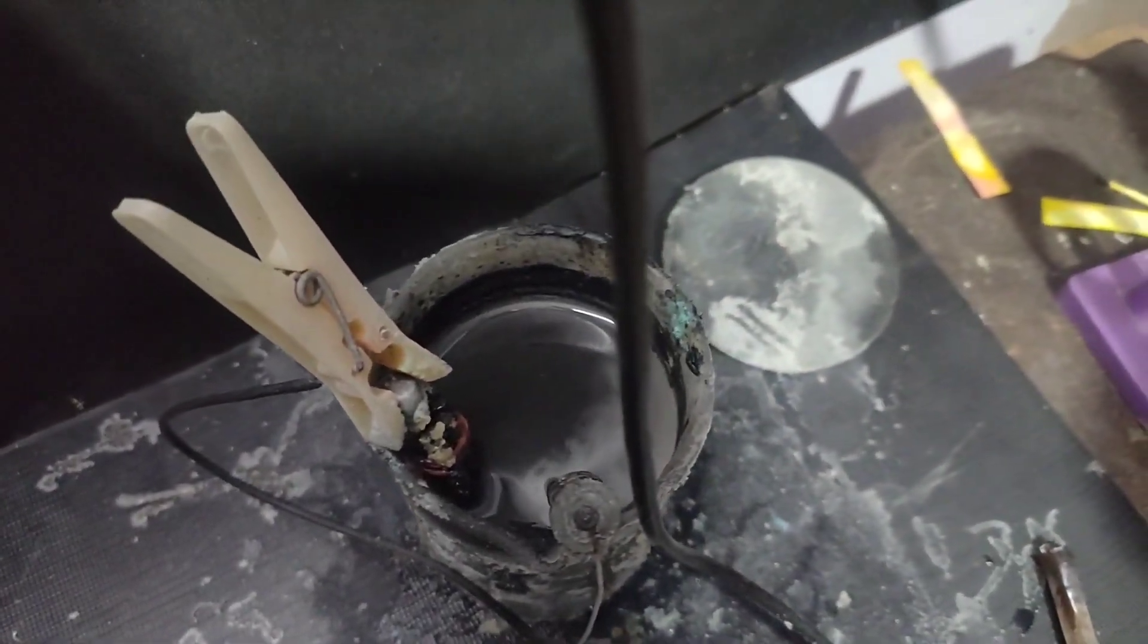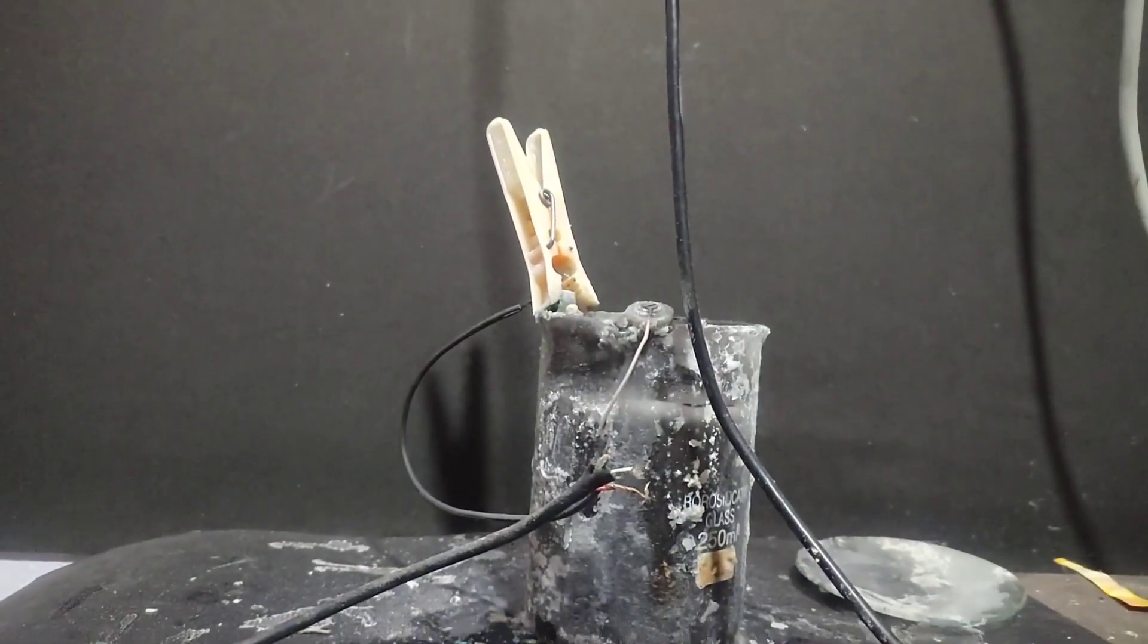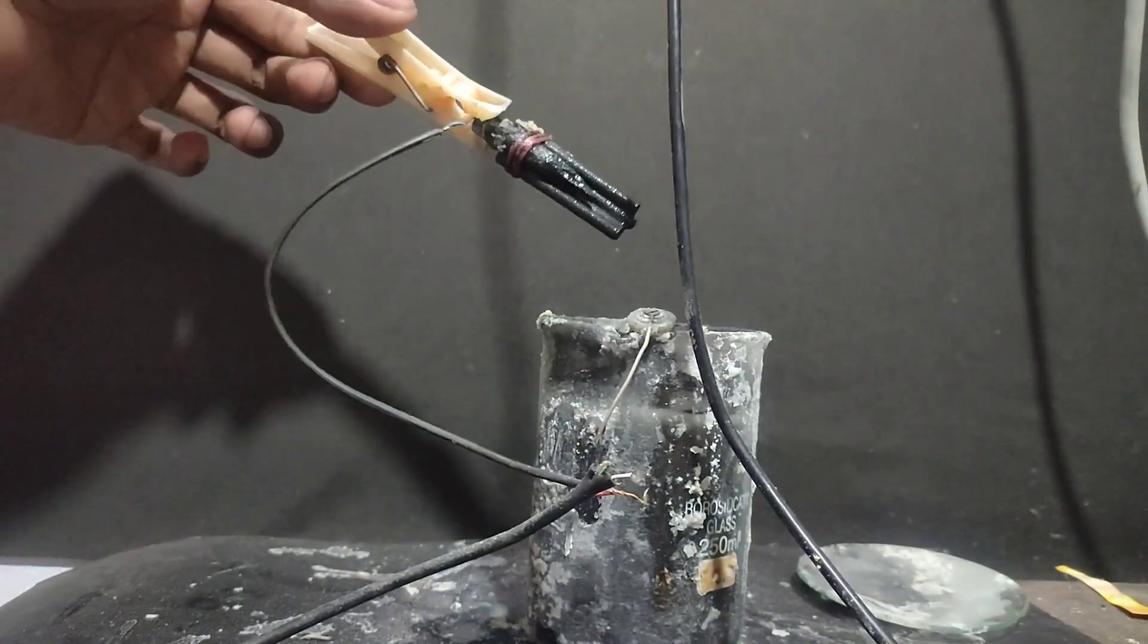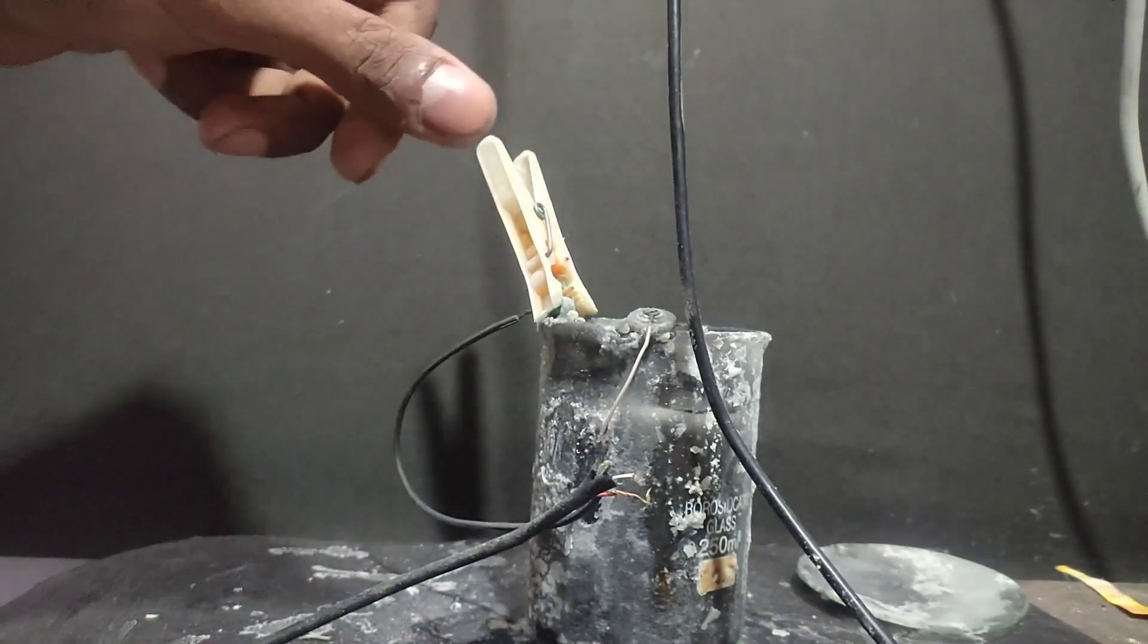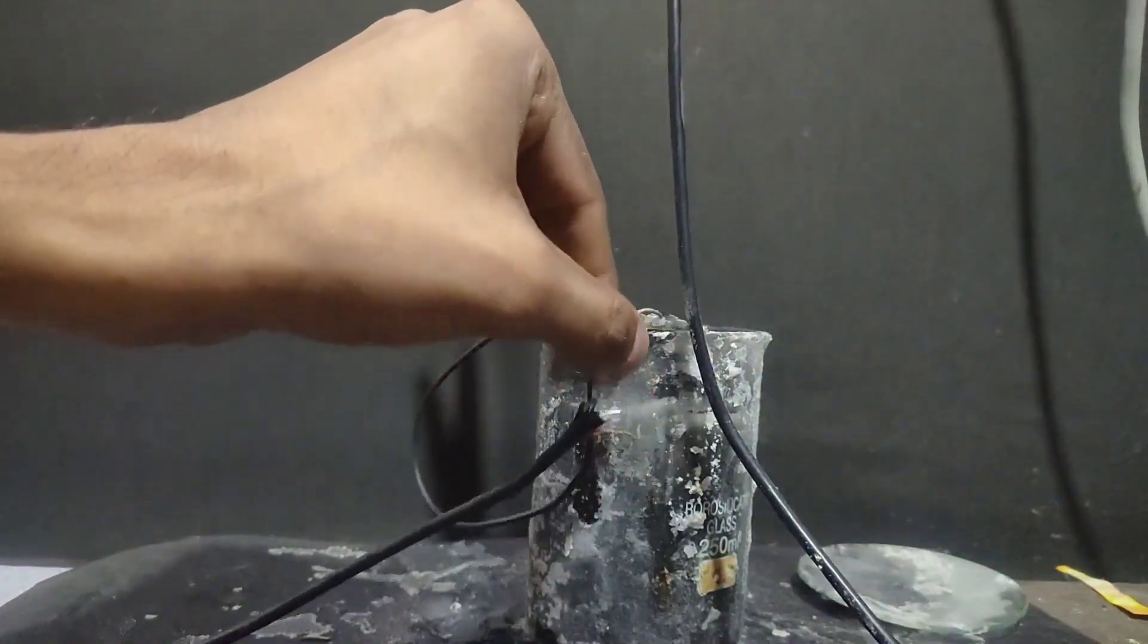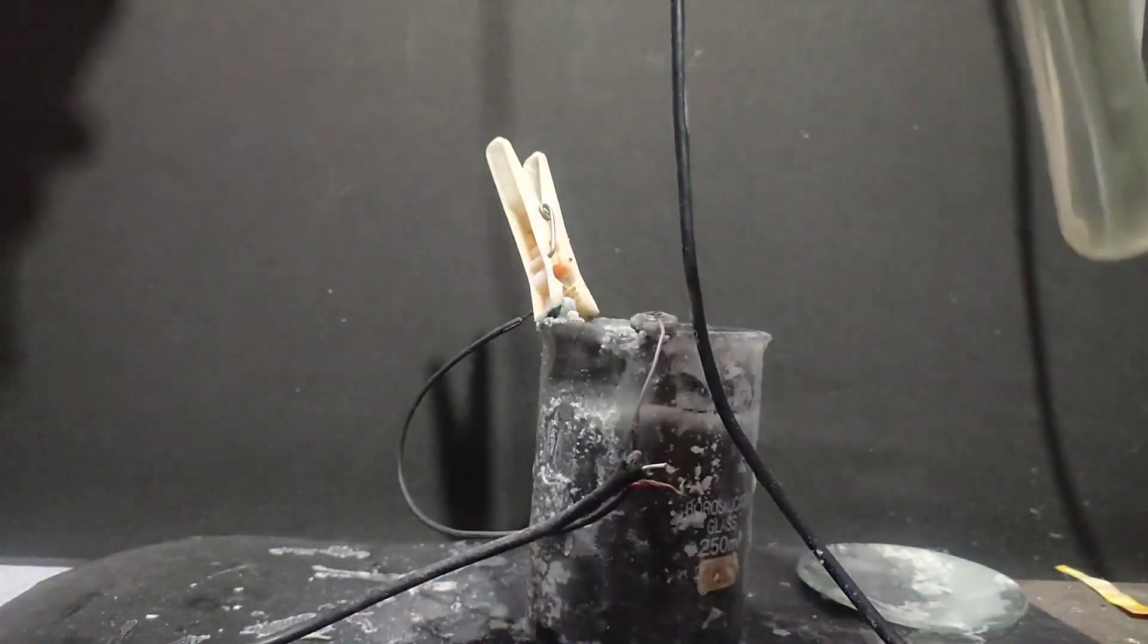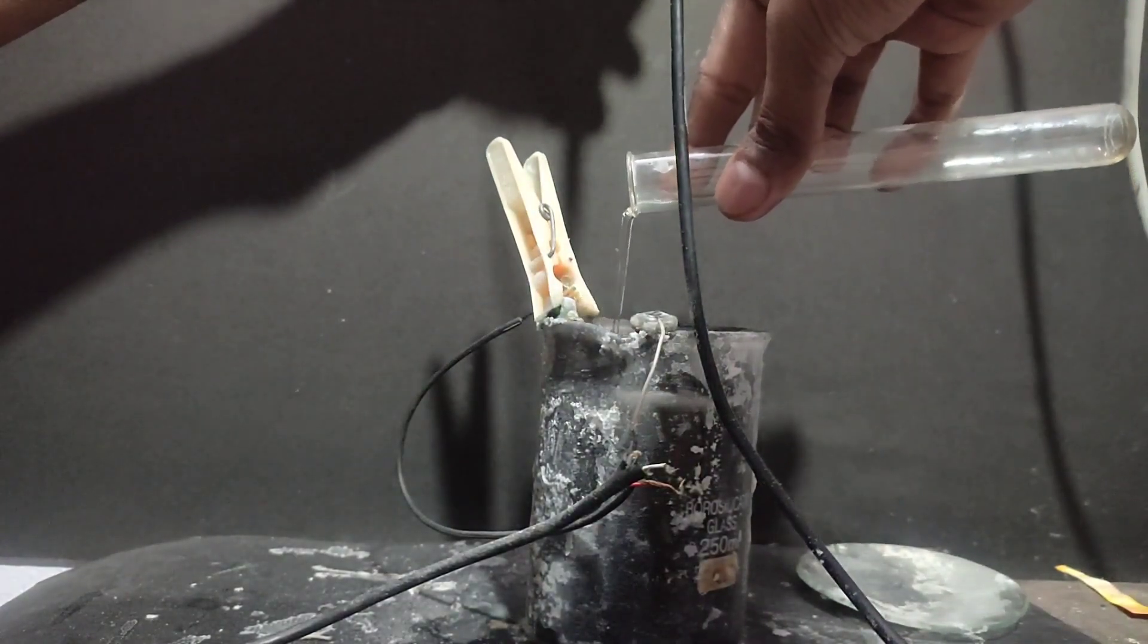After one day my electrochemical cell looked like this and the solution had turned black. I had placed some more electrodes onto the main electrode so that the surface area is increased and more current is passed through the solution. I added more saturated potassium chloride solution since potassium chloride is consumed in this reaction.